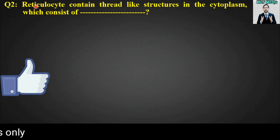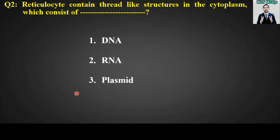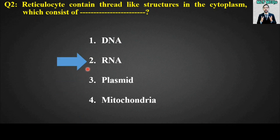MCQ number two: Reticulocytes contain thread-like structures in the cytoplasm which consist of blank. Options are: DNA, RNA, plasmid, or mitochondria. The right answer for this MCQ is option number two — RNA (ribonucleic acid).